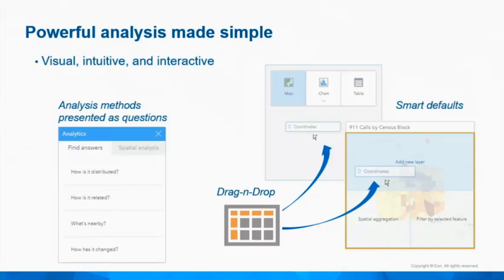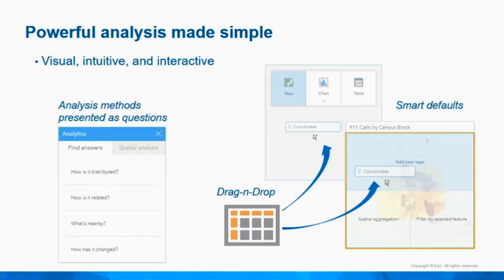Insights lets you select data and drag it into the page view, and then immediately options are presented to you. Insights recognizes the type of data you're working with — either spatial, numeric, text, or date — and then it only presents those visualization options that make sense for that particular type of data. Those are just a few ways in which Insights is smart, all to make things simpler and easier for you.